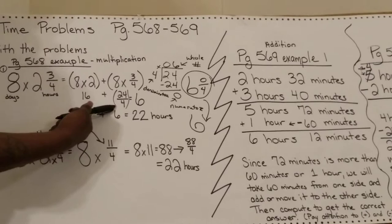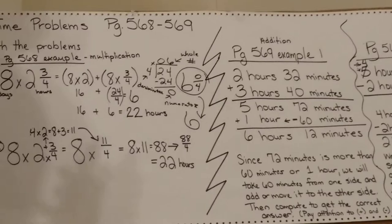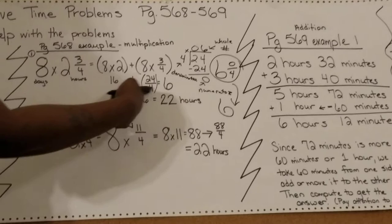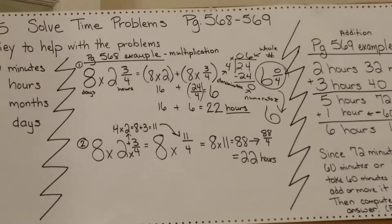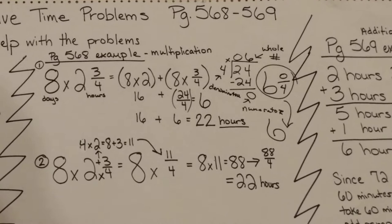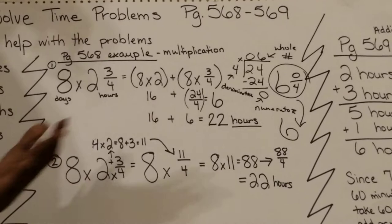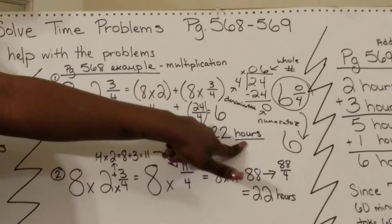My whole number goes first, and I would have 6 and 0 over 4. You do not have to put the 0 fourths, because 6 and 0 fourths is the same as the whole number 6. So now I'm going to rewrite everything. 16 plus 6 equals 22. I put the word hours here because in our problem, the question said how many hours does Crystal train. So my answer is 22 hours.